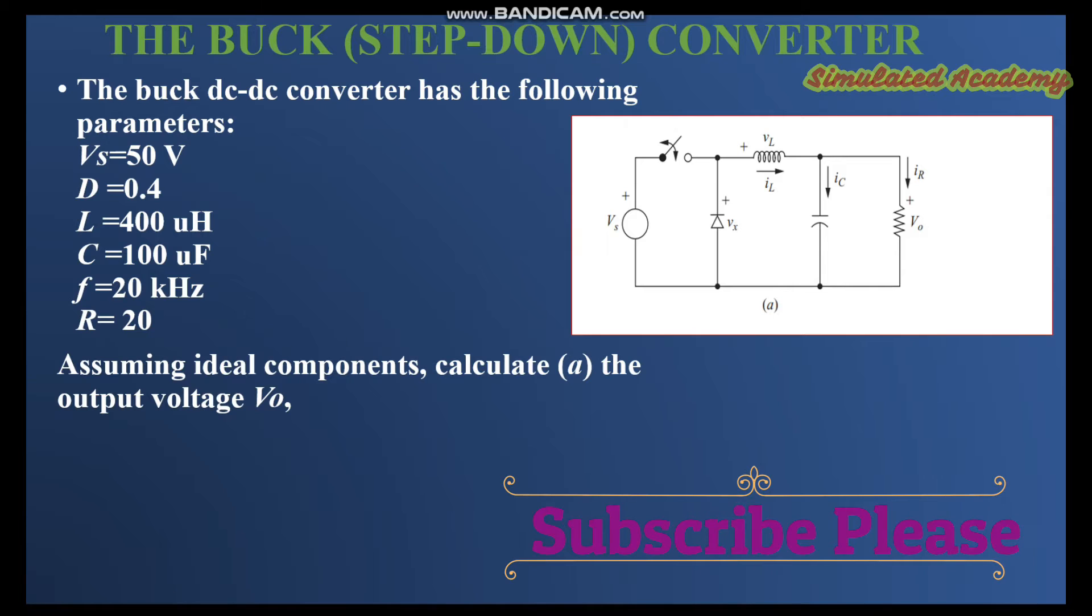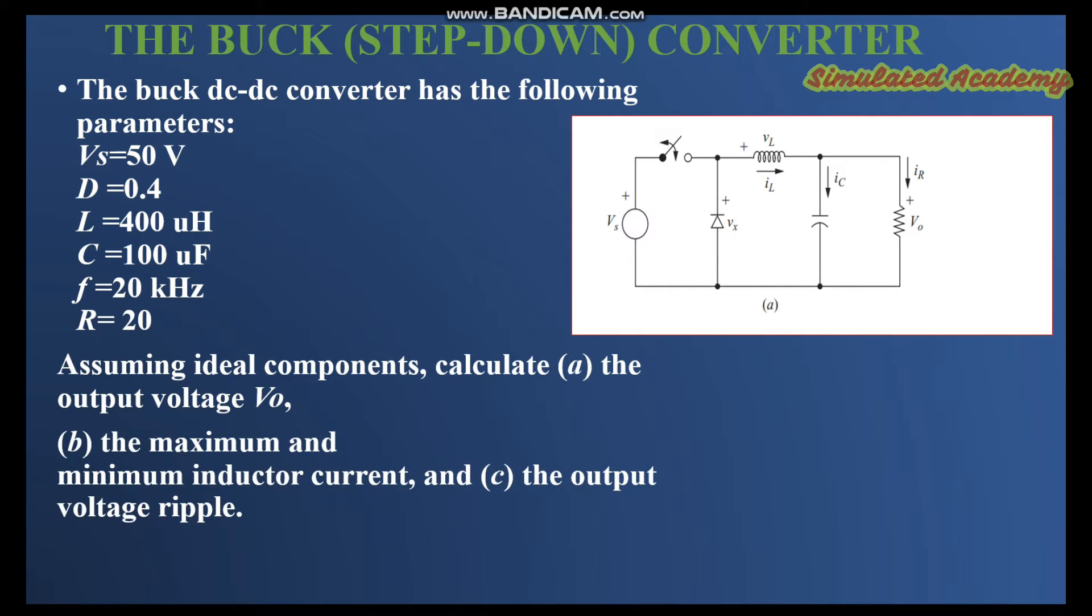It is said that you are assuming all the components are ideal. In part A you are asked to find the output voltage. In part B you are asked to find the maximum and minimum current passing through the inductor L. In part C you are asked to find the voltage ripple.